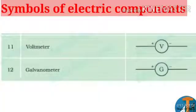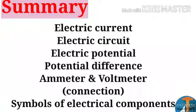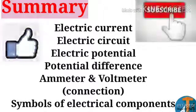Number 11: voltmeter symbol. Number 12: galvanometer symbol. So students, in this session we learned about electric current, its circuit diagram, electric potential, potential difference, ammeter and voltmeter and how they are connected, and some symbols of electrical components. If you like this video, do subscribe to my channel and keep supporting me. Thank you.